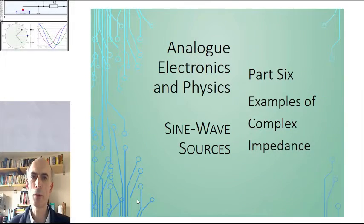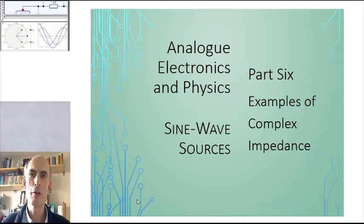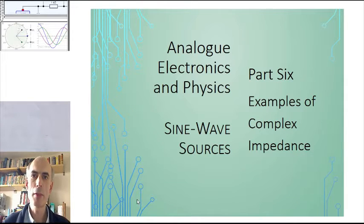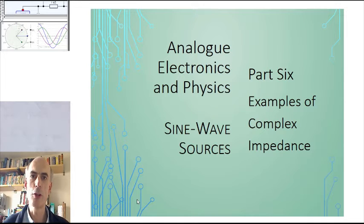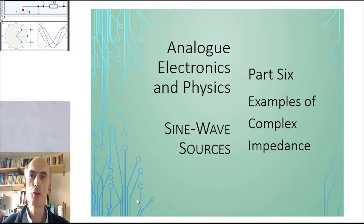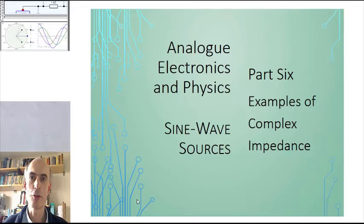Hello, and in this talk we're going to look at a few examples of the concept of complex impedance. Reminder: complex impedance is the ratio of the voltage across a component to the current flowing through a component, if you can assume that both the voltage and the current are sinusoids.